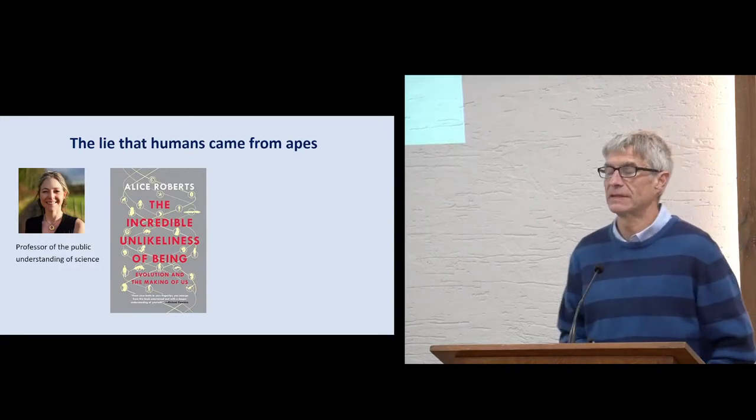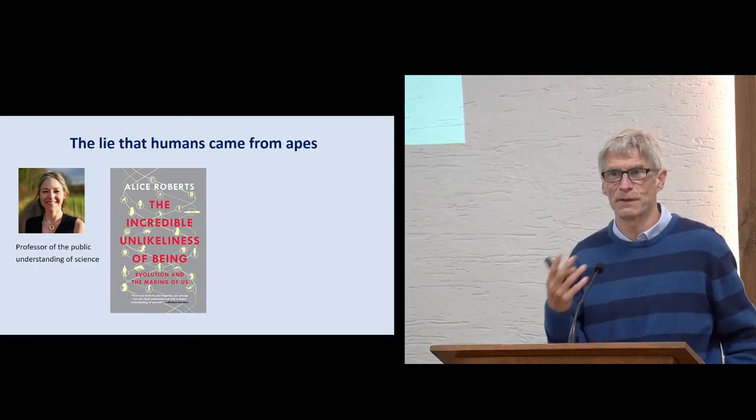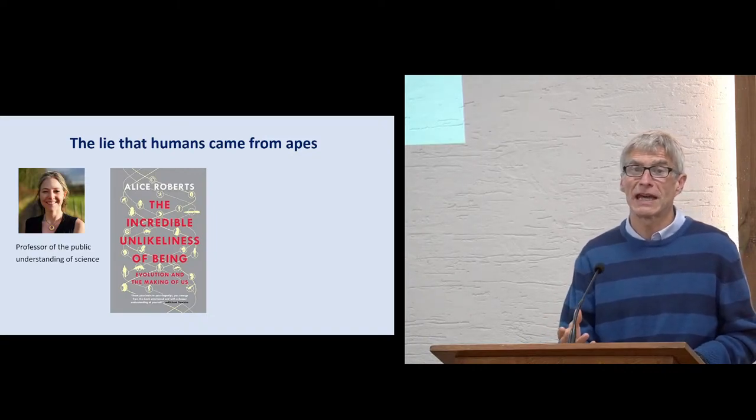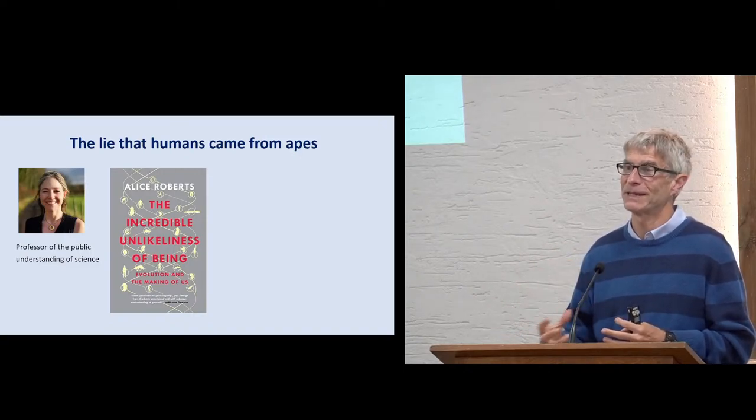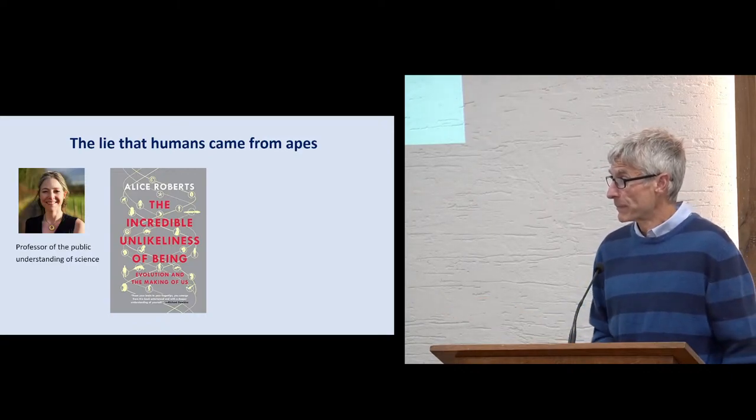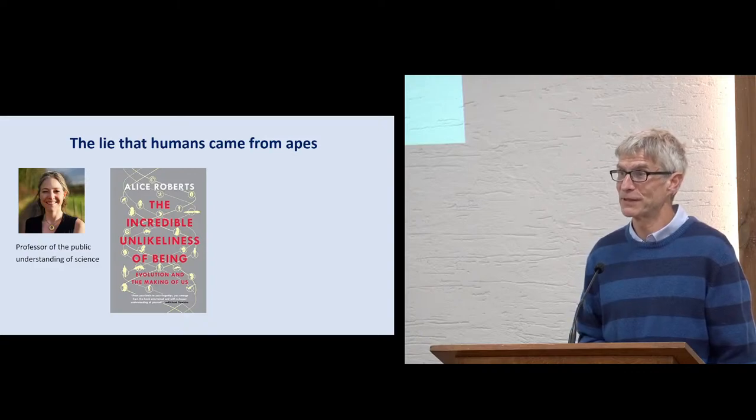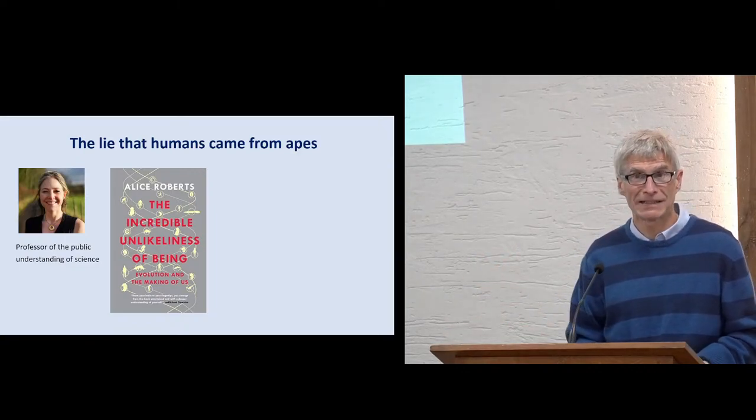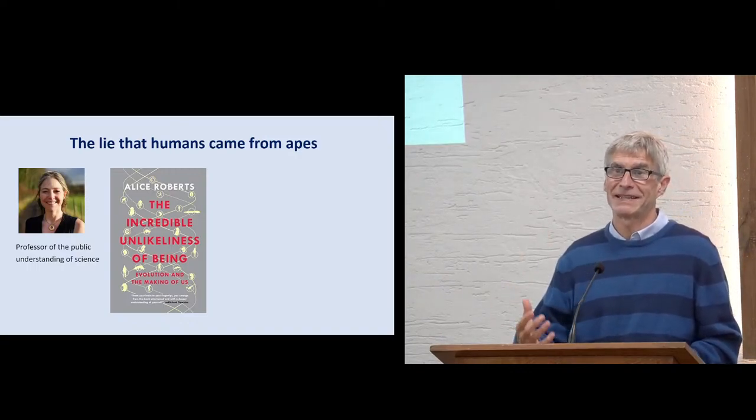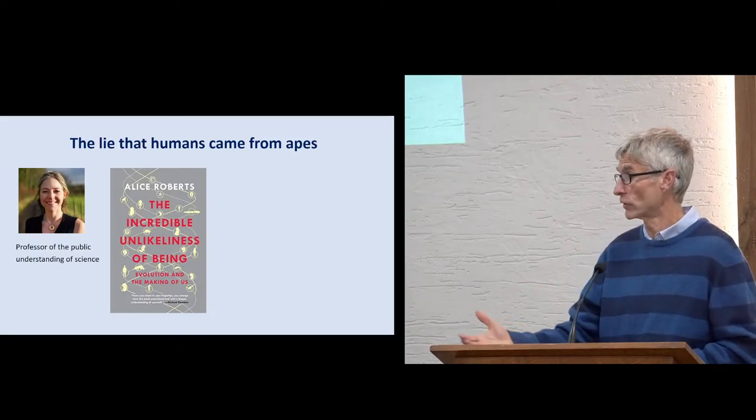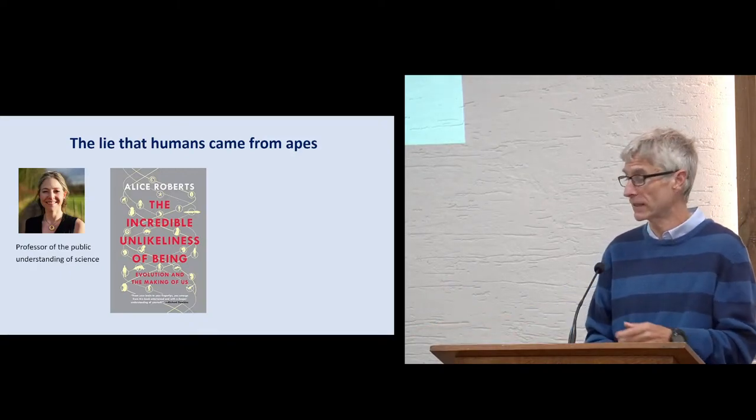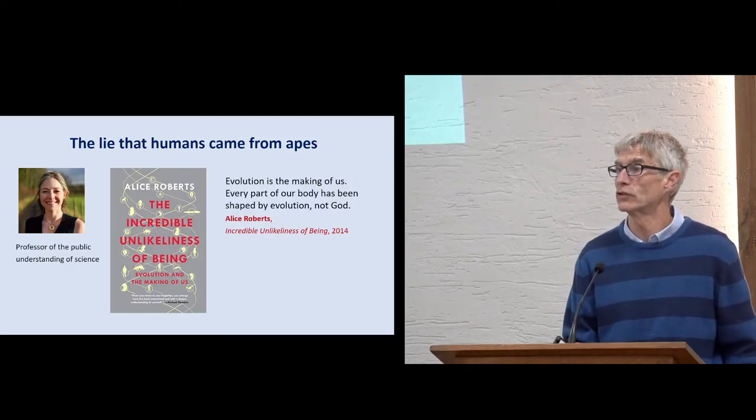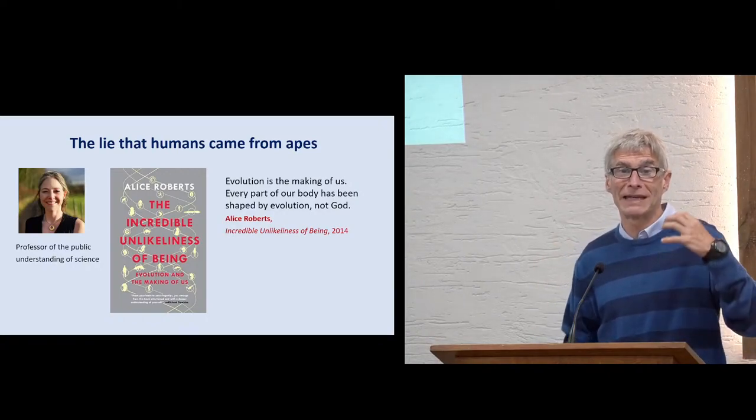The lie that humans came from apes. Now, I've mentioned already Richard Dawkins, he was a professor of the public understanding of science, and also a president of Humanist UK. Humanist UK groom the next person to be the professor of the public understanding of science. Alice Roberts has been the president of Humanist UK, and she is now a professor of the public understanding of science. She's a professor at Birmingham University. She teaches anatomy. And she has said her goal in anatomy is to tell people they are apes. They are not humans made in the image of God. She's written this book, The Incredible Unlikeliness of Being. And in that book, she explains evolution is the making of us. Every part of our body has been shaped by evolution, not God. She argues we are not made in the image of God, we're made in the image of an ape.